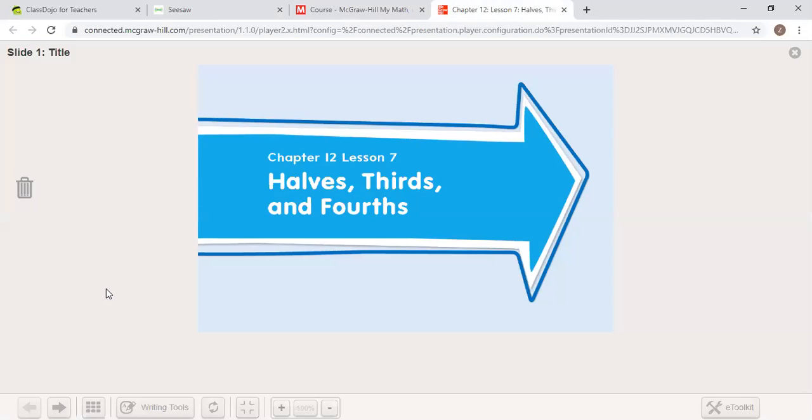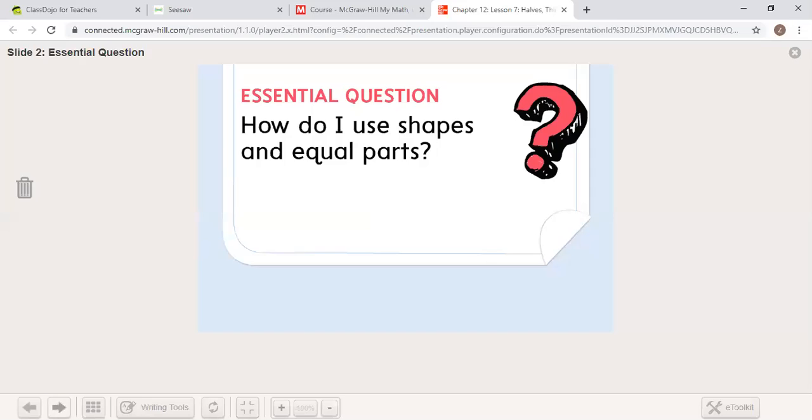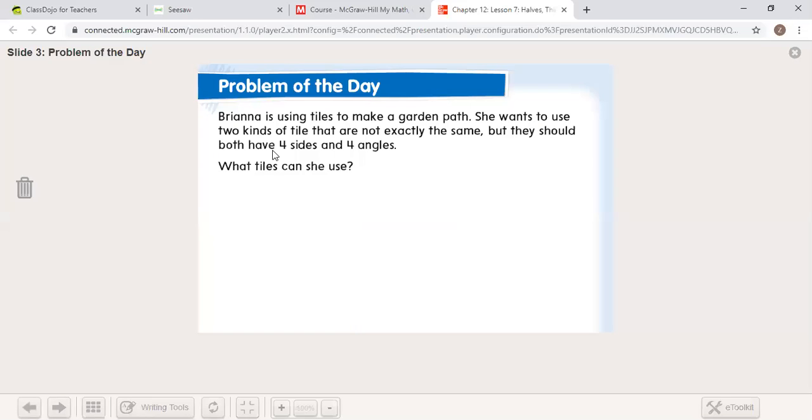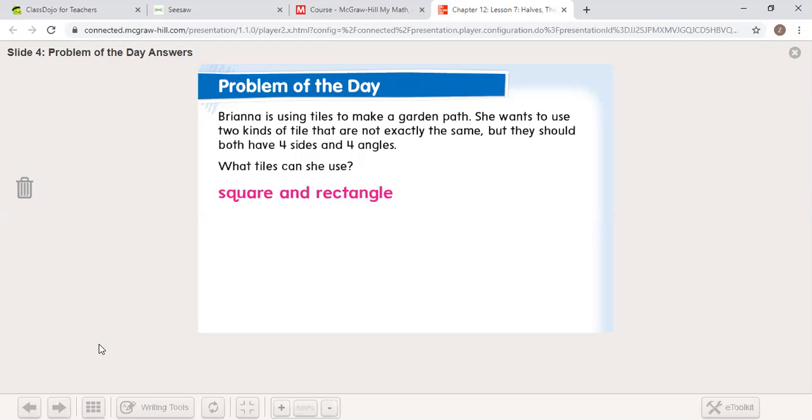Let's go ahead and look at halves, thirds, and fourths. Problem of the day. Brianna is using tiles to make a garden path. She wants to use two kinds of tile that are not exactly the same. They both should have four sides and four angles. So what two shapes could she use? She would use a square and a rectangle.